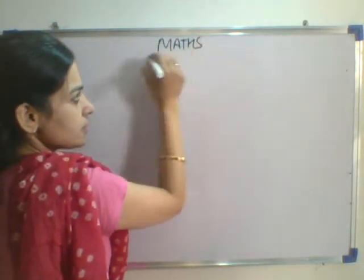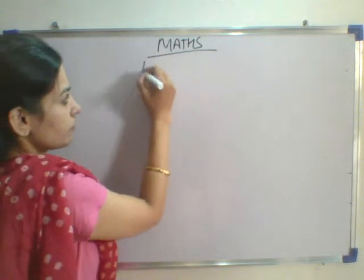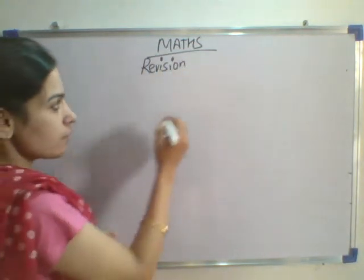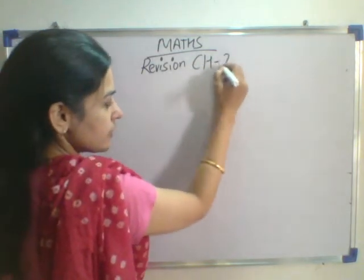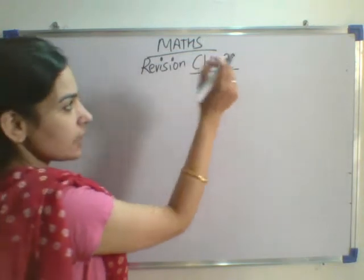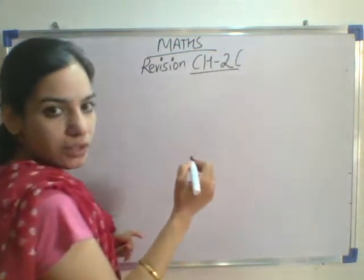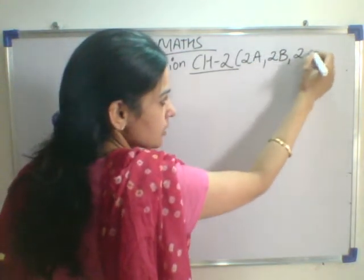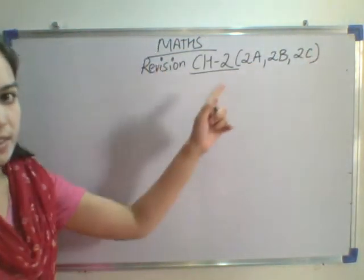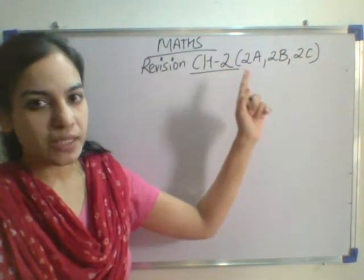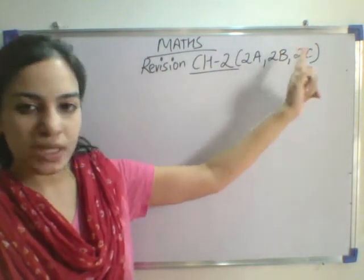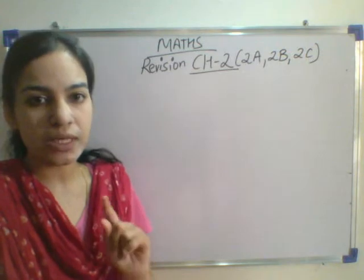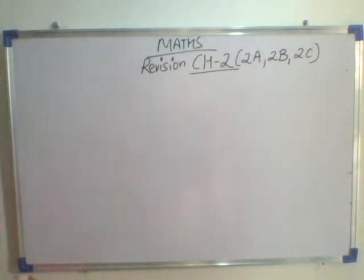So, let us start the revision. Today, we will be doing the revision of chapter 2nd. I will be taking the questions from exercise 2A, 2B and 2C — this exercise we have done, so we will be revising this. And similar questions I have given you in the worksheet. You have to do those questions by your own. So, let us start.